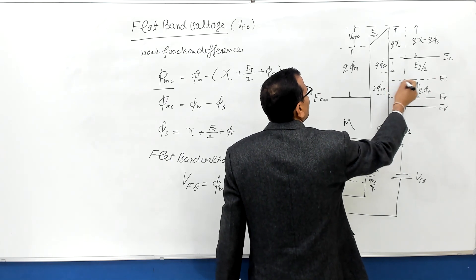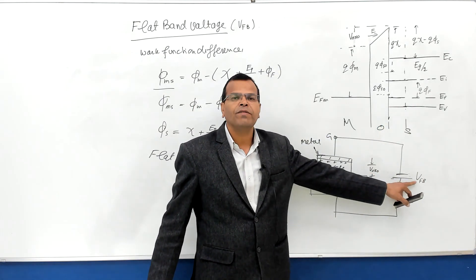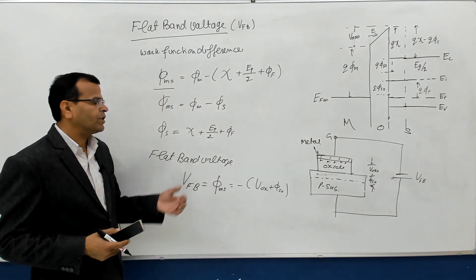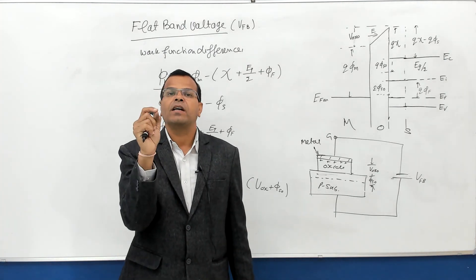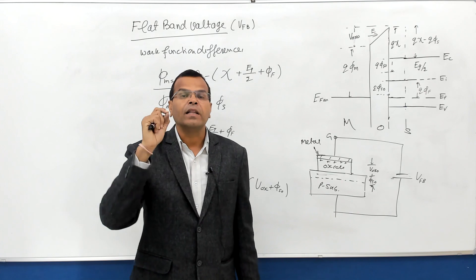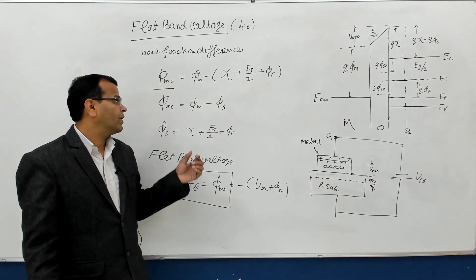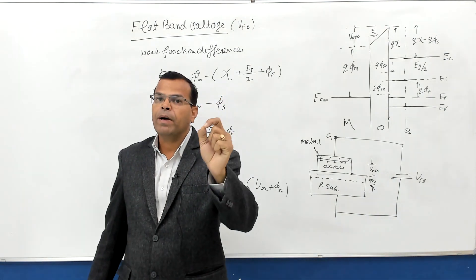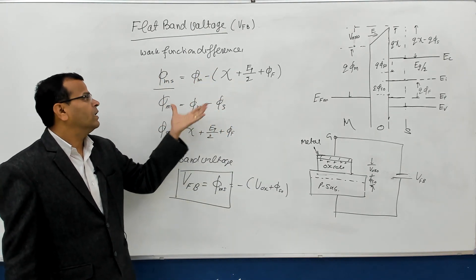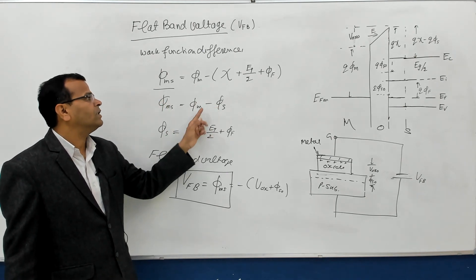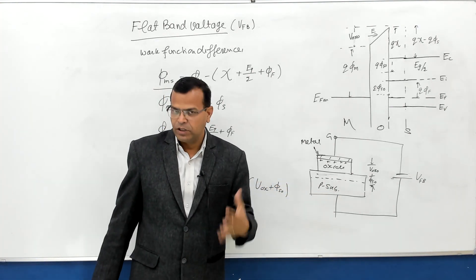If I want to make the bands flat, I need to connect some external voltage to the capacitor. Remember: the work function of the semiconductor in a P-type substrate is always more than the work function of the metal. Therefore, the work function difference φMS is always negative for a MOS capacitor with a P-type substrate.